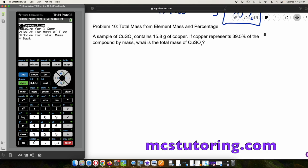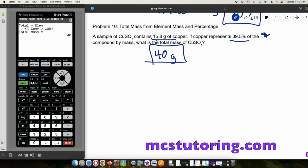Total mass from element mass and percentage. A sample of CuSO4 contains 15.8 grams of copper. If copper represents 39.5% of the compound by mass, what's the total mass of CuSO4? We're looking for total mass here and the mass of the element, that's going to be that 15.8. The percent composition is 39.5. And there we go. The total mass is 40 grams. Fantastic. We've done it all.